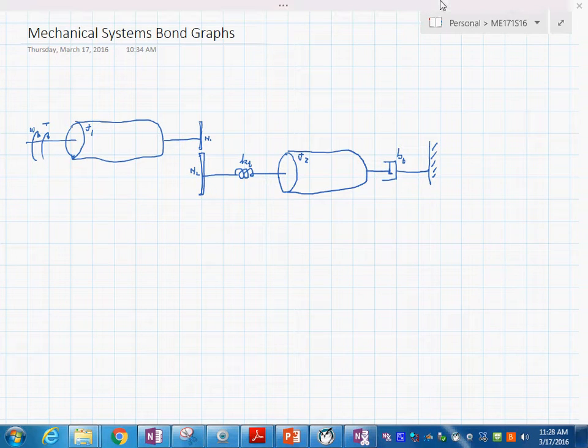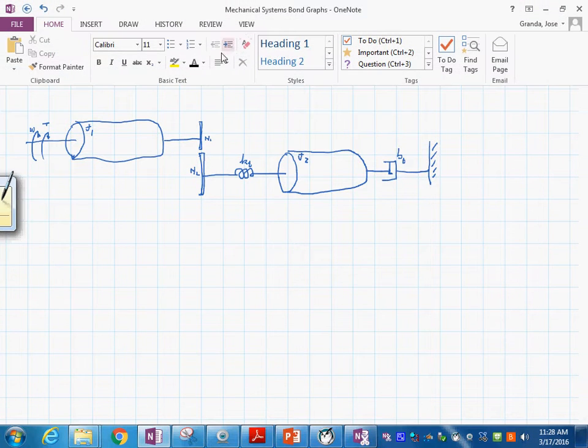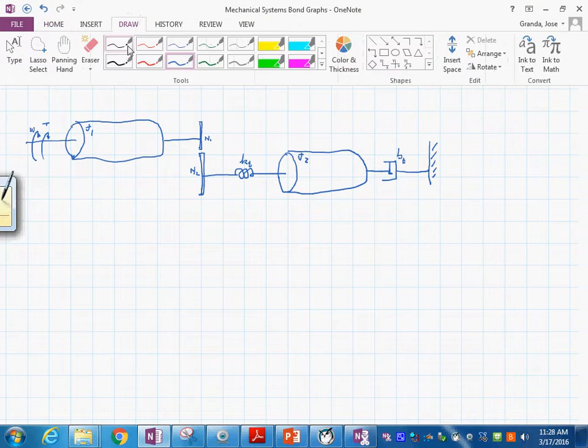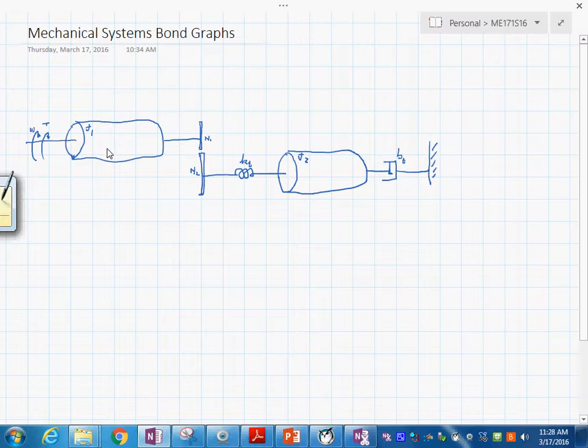The first thing we're going to do is to use the one junctions for each angular velocity in this case. Then I'm going to put the one junction here for omega 1 and this of course it will be the same as the one in here but obviously in here that is not the case.